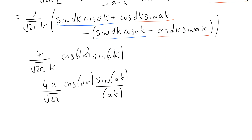This is the Fourier transform of the transmission function of our two slits; we would square it to get the diffraction pattern. We won't bother squaring it here because all we want to do is compare this result with what we get when we use the convolution theorem.